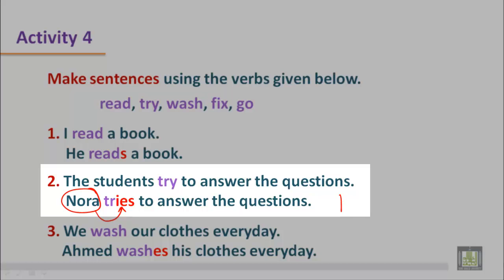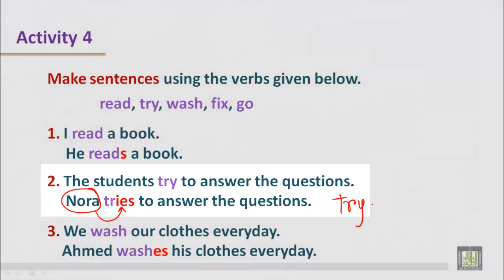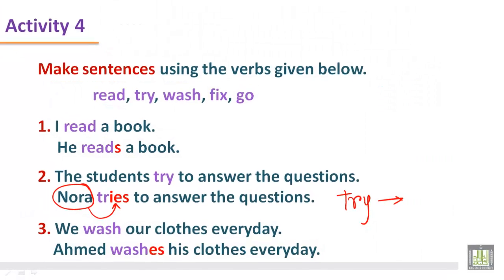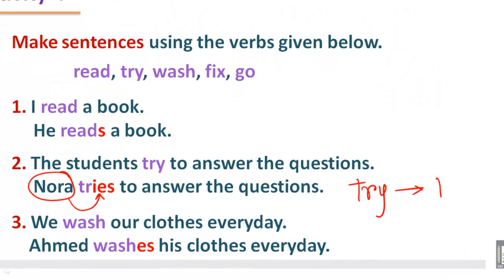Nora tries to answer the question. The main verb is 'try' — that is the base form. But when it is used with a third person singular number, we have to write 'tries'. We just remove the Y and in place of Y, we write IES.